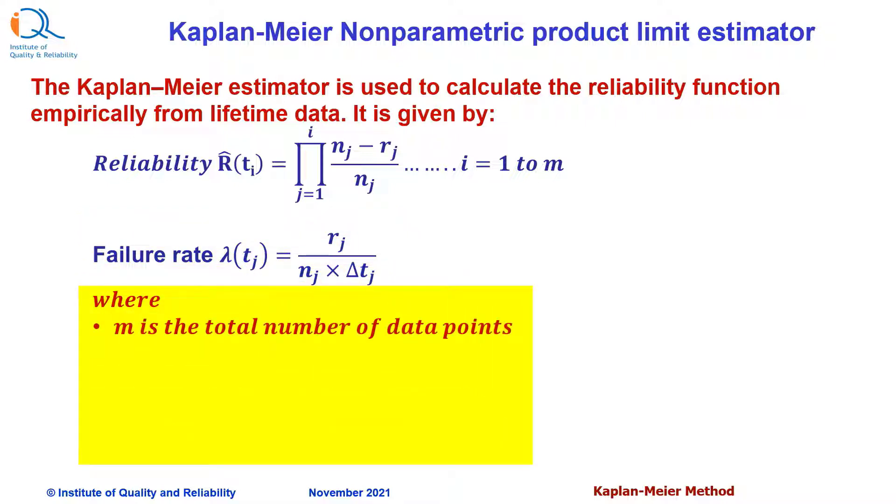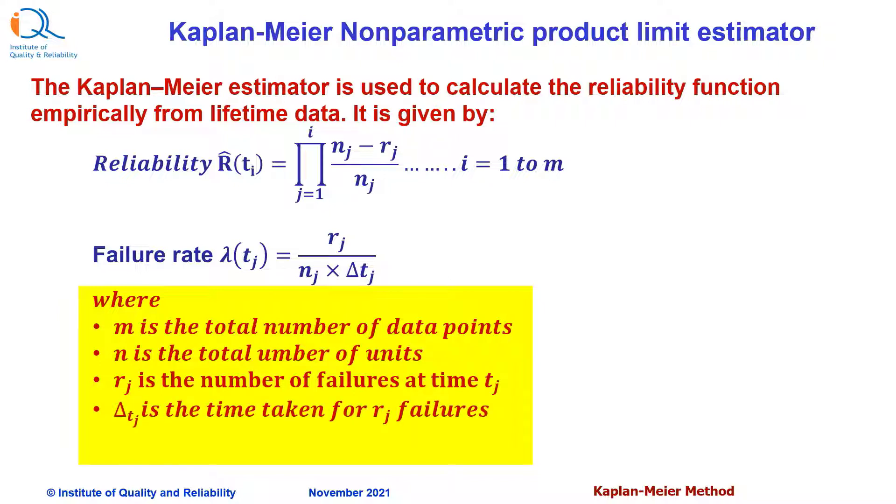Where m is the total number of data points, n is the total number of units. Delta tj is the time taken for rj failures. The variable nj is equal to n minus summation of failures in the previous times. That is summation of rj.